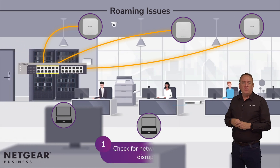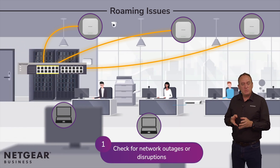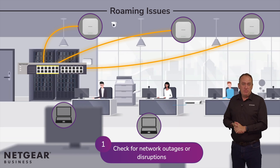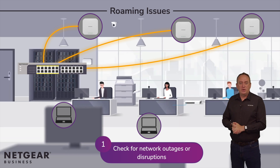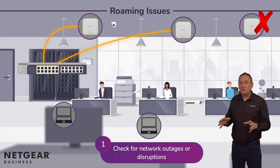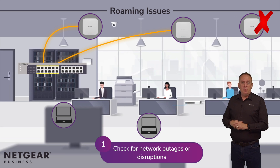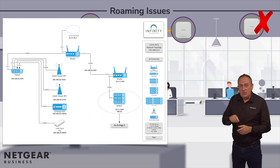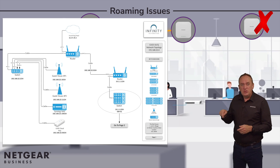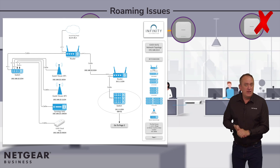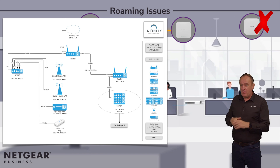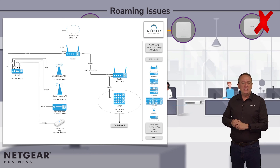The first thing to check for are any network outages or disruptions which might be causing problems with roaming, including issues with the internet service provider, power outages, or anything related to connectivity in general. It only takes one access point to be disconnected to throw out the coverage of a large section of the building. The notes within your network design are invaluable when troubleshooting, because for all you know, someone else has been messing about with the configuration and that's ended up causing these issues.